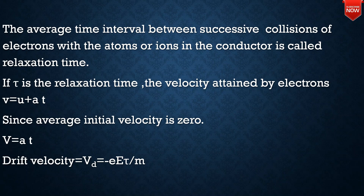The velocity attained by the electrons is given by v = u + at. Using the relaxation time tau, and since the average initial velocity u is zero, the drift velocity becomes v_d = -(eE/m) × tau. This is derived from the first equation of motion.